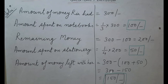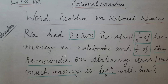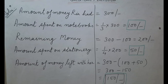Now we start solving. Amount of money Rhea had: 300 rupees. Write clearly — the statement and the mathematical part — so all equals signs are in one column, making it easy to revise and check your calculations. Amount spent on notebooks: one-third of 300, meaning multiplication — 300 divided by 3 equals 100 rupees.